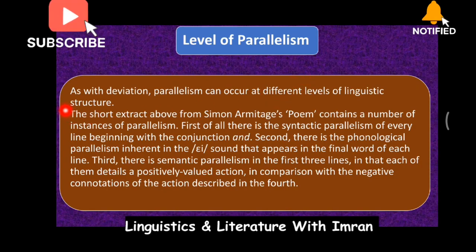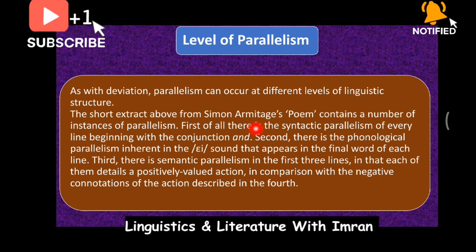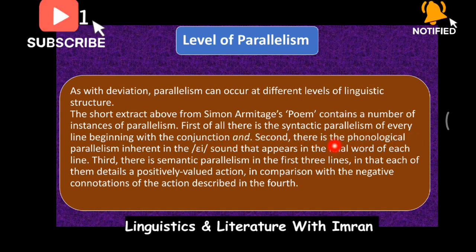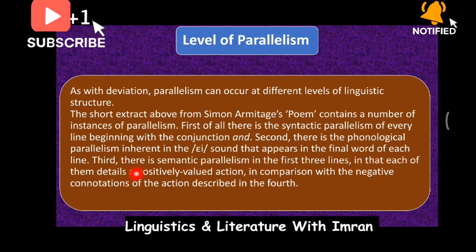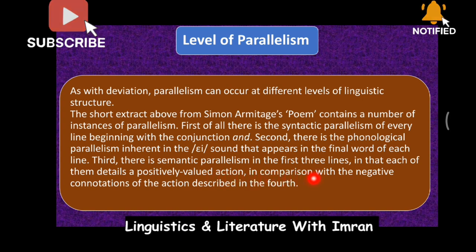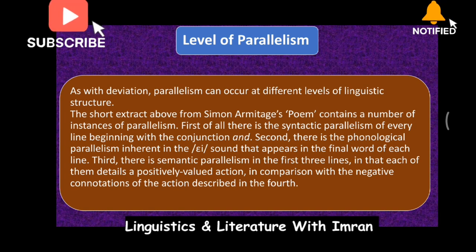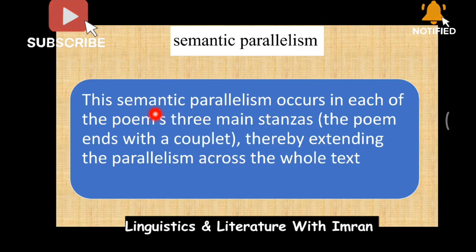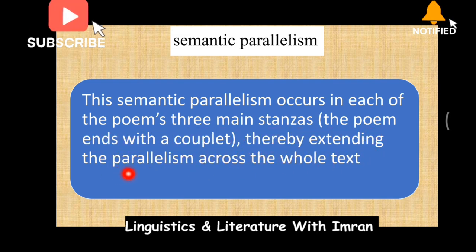Levels of parallelism: As with deviation, parallelism can occur at different levels of linguistic structure. The short extract from Simon Armitage's poem contains a number of instances of parallelism. First, there is syntactic parallelism — every line beginning with the conjunction 'and'. Second, there is phonological parallelism inherent in the 'a' sound. Third, there is semantic parallelism in that the first three lines each detail a positively valued action, in comparison with the negative connotation of the action described in the fourth line. This semantic parallelism occurs across the poem's main stanzas, extending the parallelism across the whole text.